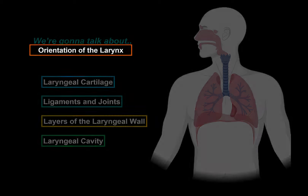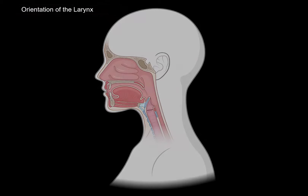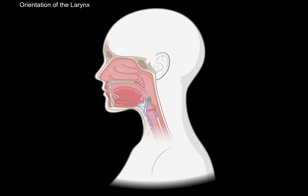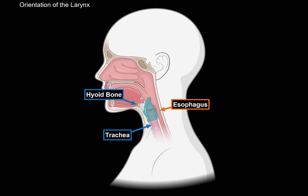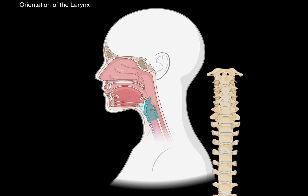and talk a little bit about what's special with the laryngeal cavity. The larynx is located right about here. It lies between the hyoid bone and the trachea, and right in front of the esophagus. Topographically, it starts at the region of the 4th–5th cervical vertebrae, and ends at the region of the 6th–7th cervical vertebrae.